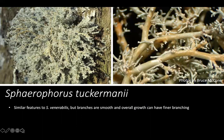Spherophorus tuckermanii, another species in this genus, is similar in the features just described, but the branches are smoother overall. It can also have a much finer, coral-like branching pattern. You can see it again here — it still has some fat branches, but also many tiny branches as well, and not as much of that pitted texture on the branches.